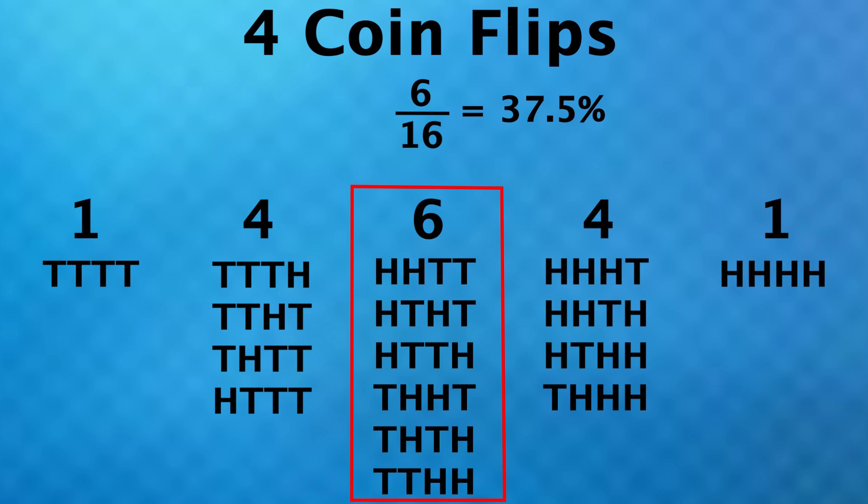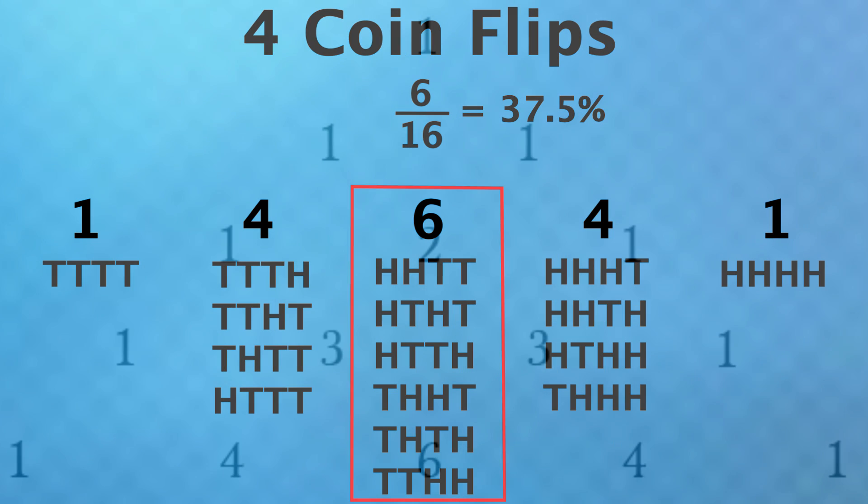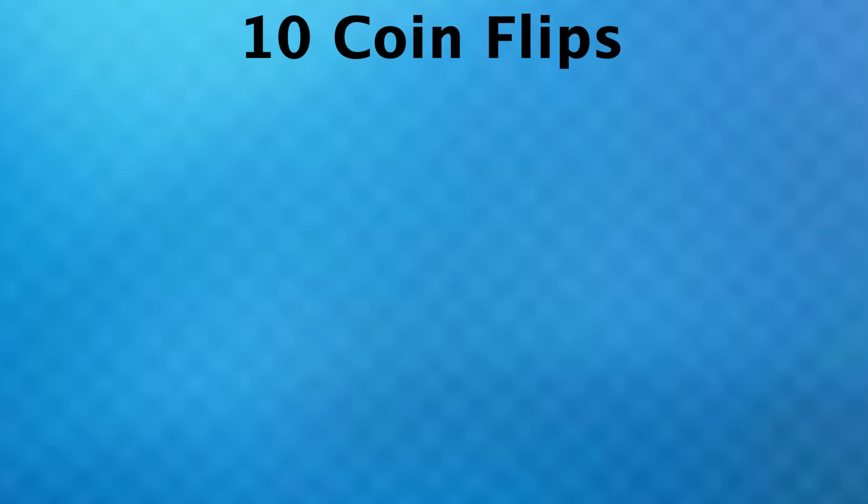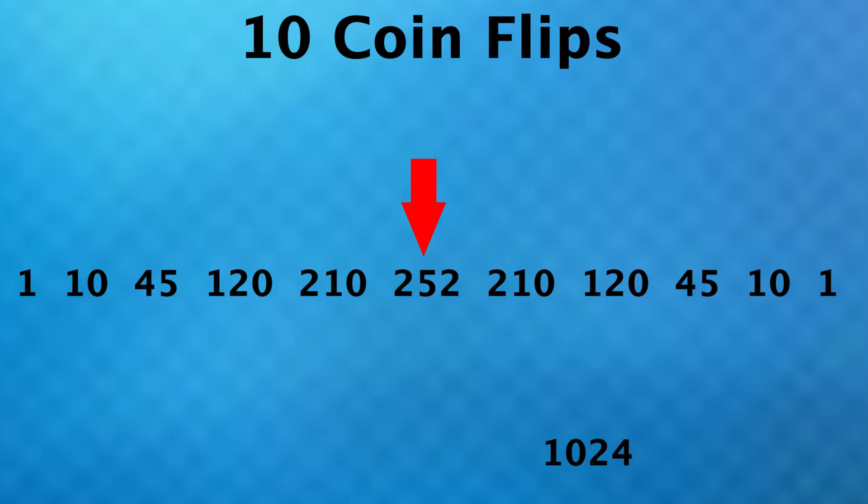Now as I'm sure many of you already know, the numbers we see here are actually those in the fifth row of Pascal's triangle, which we can use to analyze any number of coin flips. So next, let's look at 10 coin flips, and to help with this, we'll use the 11th row of Pascal's triangle. From here we can see there are 252 ways to get five heads and five tails, our expected outcome. Then all the numbers here add up to 1024, which means the probability of getting the expected outcome is about 24.6%, even lower than before.